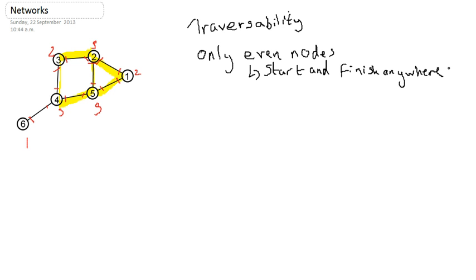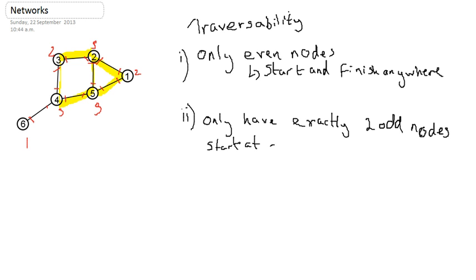If there are only odd nodes, the other condition for traversability, the second condition for traversability is if you only have exactly two odd nodes. Oh, my pen has stopped working there, let me get that back. So if you have exactly two odd nodes you start at an odd node and finish at the other.